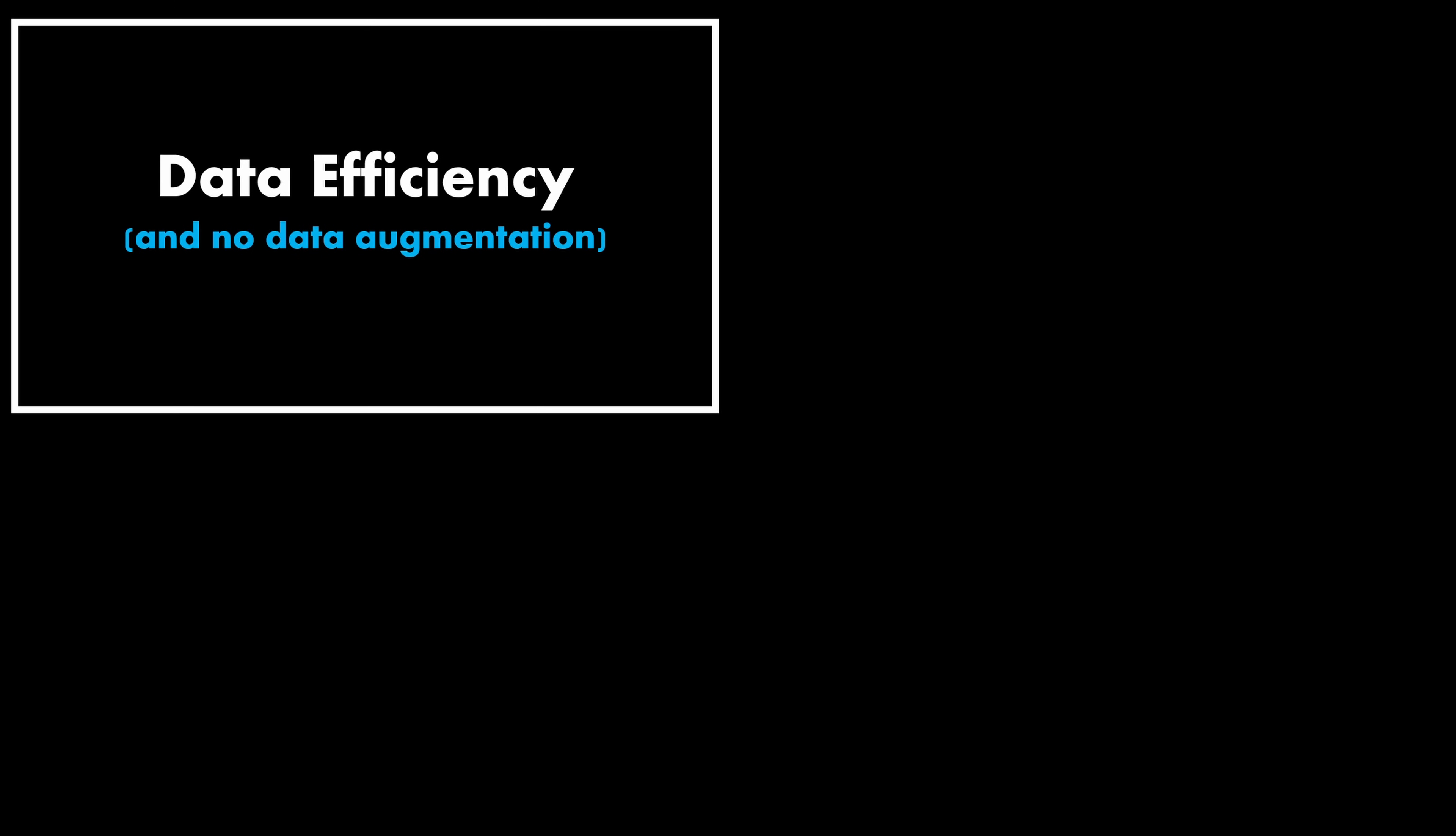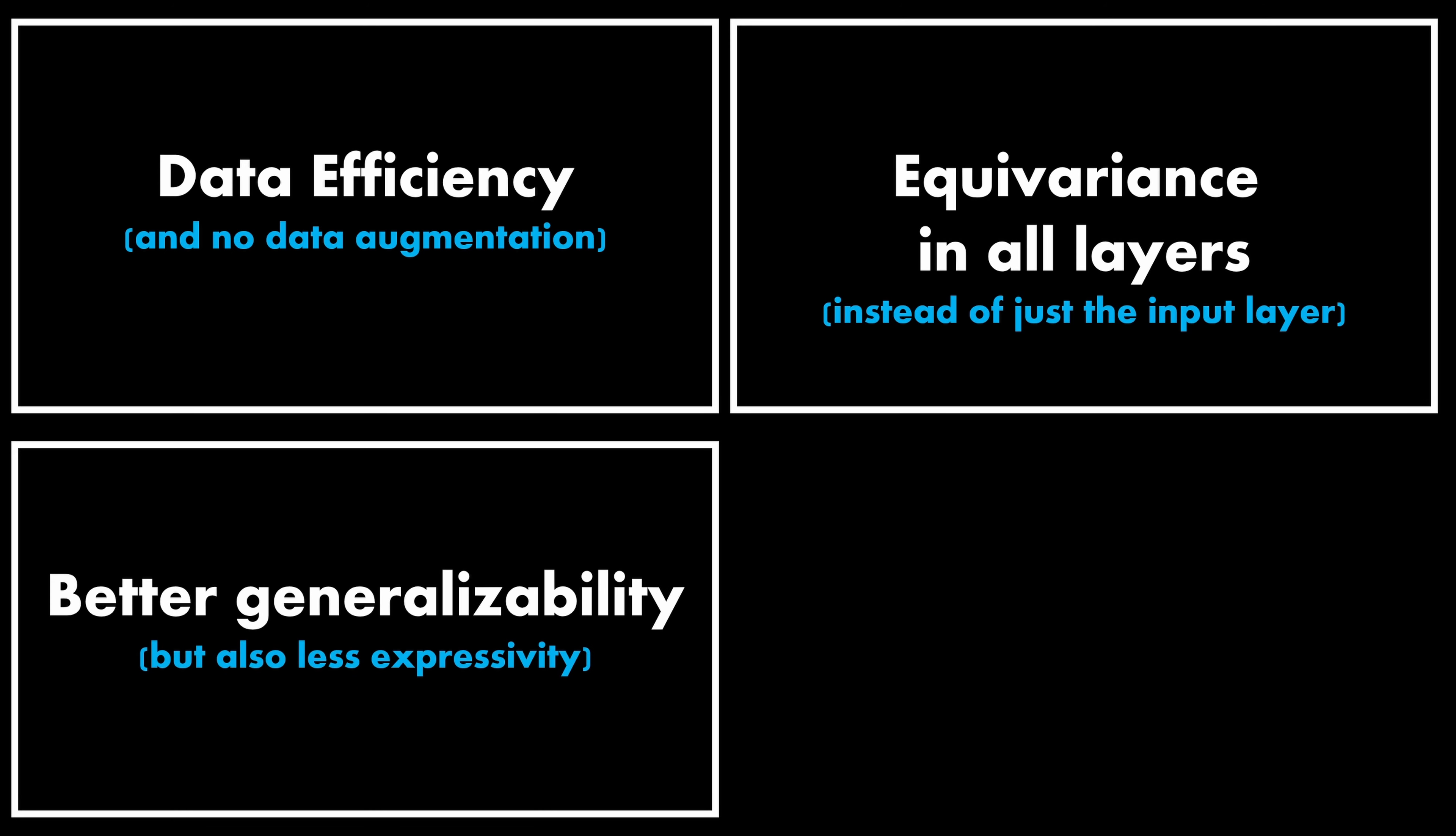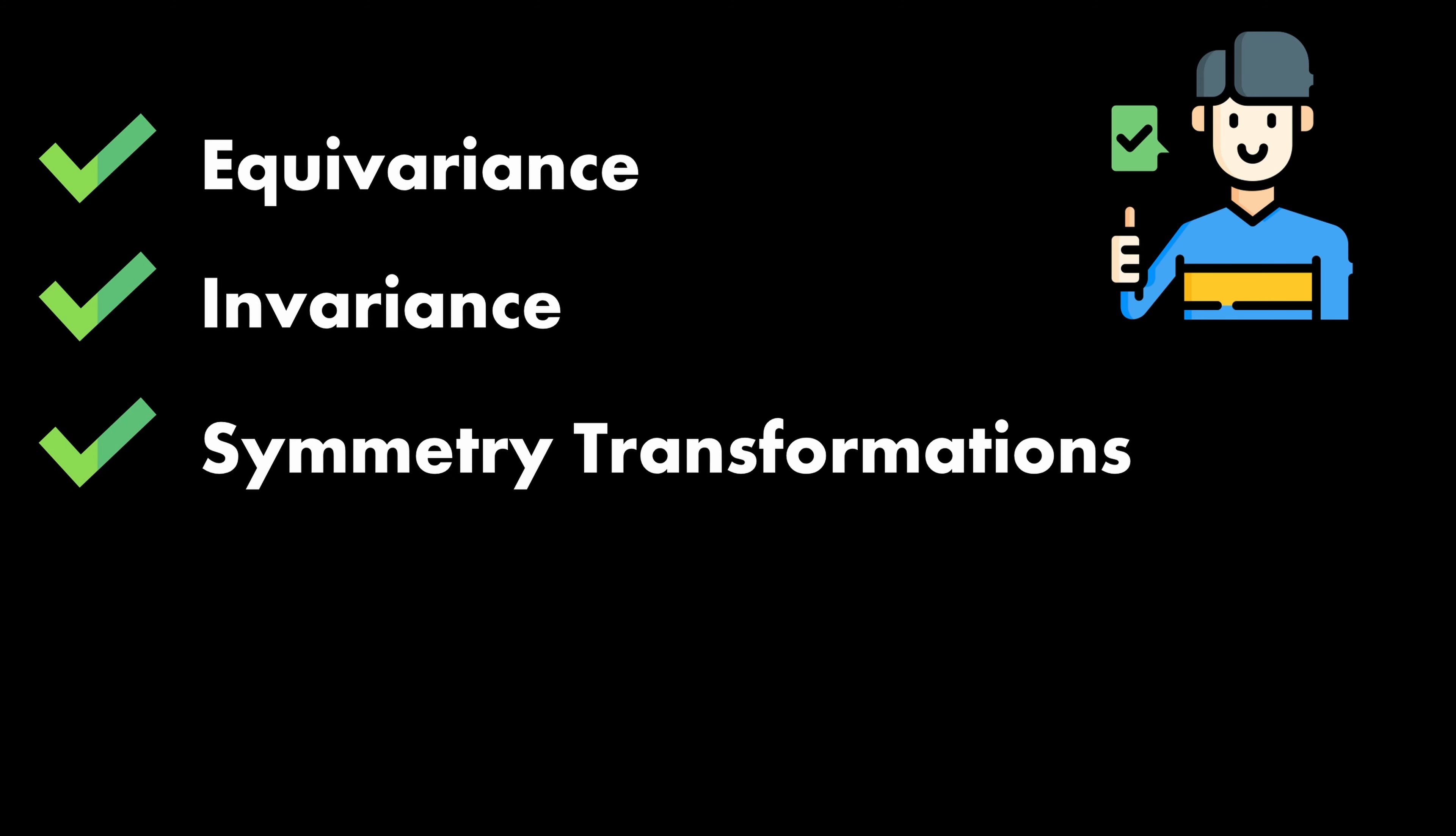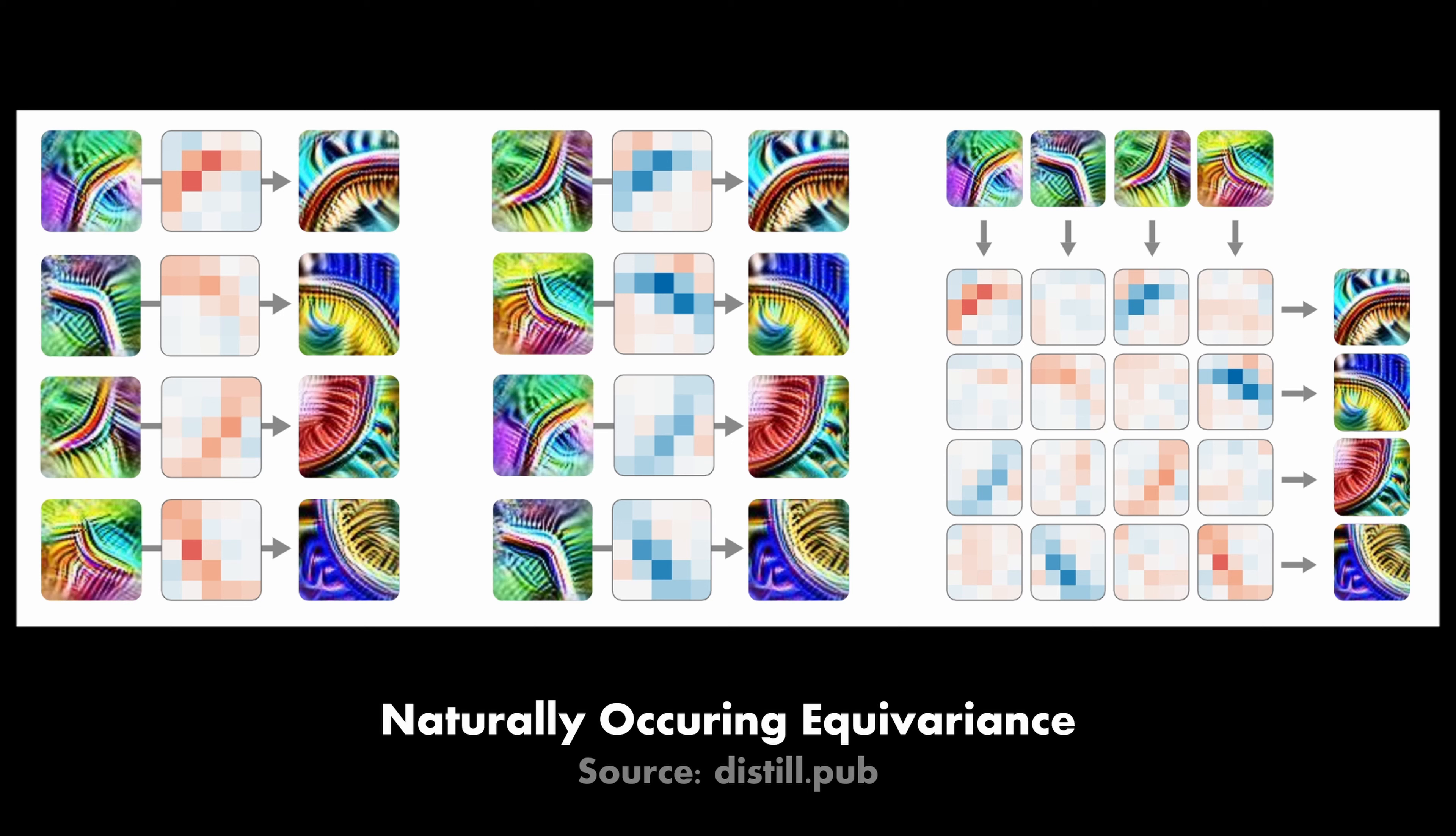Let's wrap up some of the motivations for designing equivariant neural networks. First of all, we need much less data and can get rid of data augmentations. Then, we are also able to introduce equivariance in all layers, not just the input layer. Finally, it leads to better generalizability and less complex models due to weight sharing. Just a quick check, at this point of the video, you should be familiar with what equivariance and invariance are, what symmetry transformations do on a high level, and finally, what the motivation of equivariant neural networks is. Let's move on with the final part of this video.